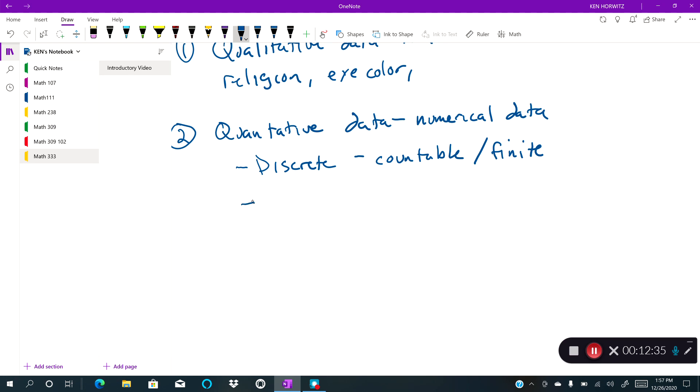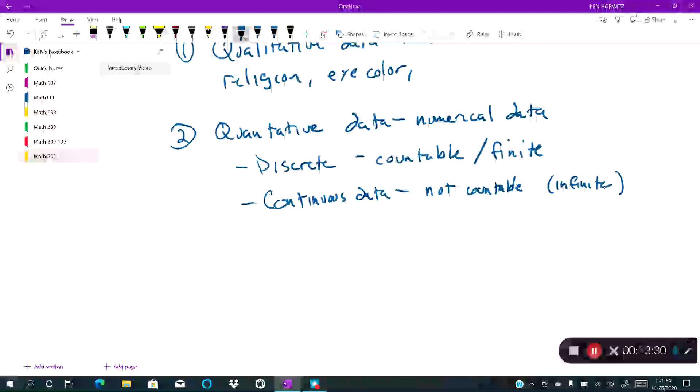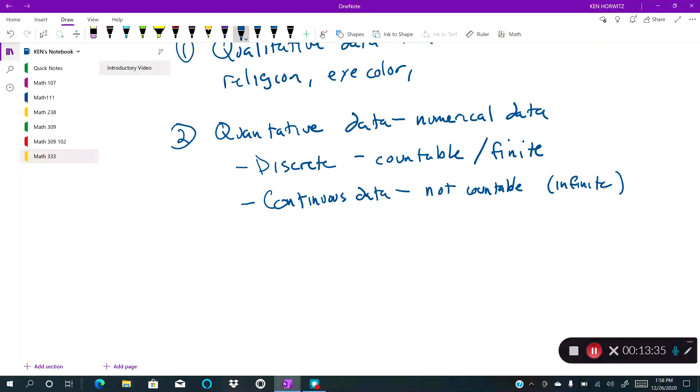And the second is continuous data. And continuous data is not countable necessarily and has infinite values. So for example, if we're talking about weight. Now, very often we round weight to the nearest pound, but you could be 250 pounds, you could be 250 and a tenth, two tenths, three tenths. Any number in between 250 and 251 you could be. It doesn't necessarily mean that your scale will measure that number, but all the numbers in between 250 and 251 are possibilities. So that, in a sense, would be continuous data.